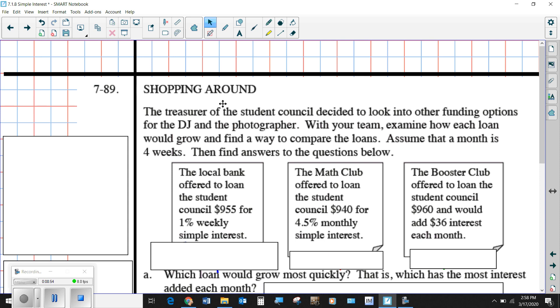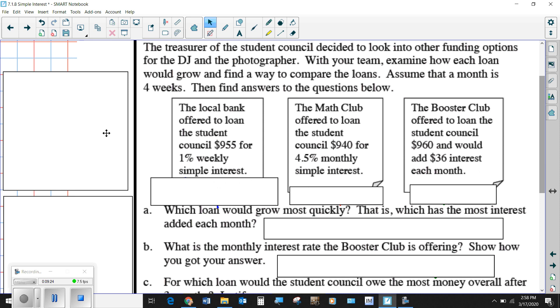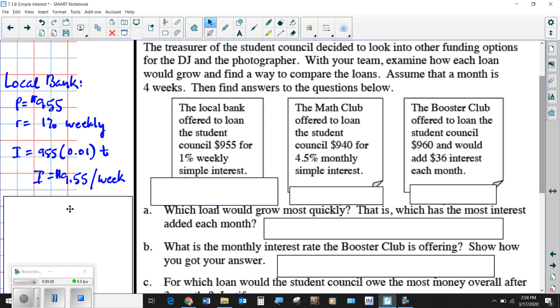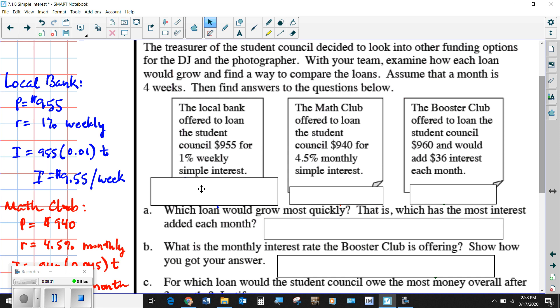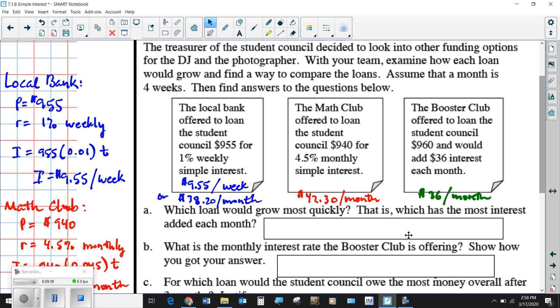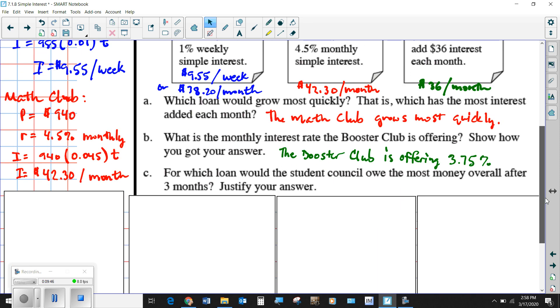Here we've got shopping around. If you want to go around to different sources of money, they all have different terms. The local bank is willing to give you $955 for 1% weekly. The math club will give you $940, but they're going to charge you monthly 4.5%. And then the booster club doesn't tell you the percent. They just say pay us back $36 per month if we lend you $960. So I'm going to clear out all of these boxes here and let you see the work that I've done. Then I'll explain each part as we go.